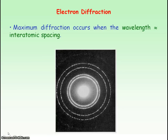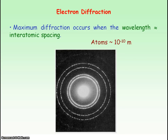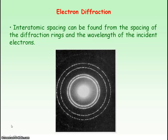From diffraction, to get maximum diffraction the wavelength has to be a similar size to the gap. So for electron diffraction, to get maximum observable diffraction, the de Broglie wavelength of the electrons has to approximately equal the interatomic spacing — the spacing between atoms — which is on the order of 10⁻¹⁰ metres. From the electron diffraction experiment you can determine the spacing between atoms from the spacing between the diffraction rings and the de Broglie wavelength of the electrons.